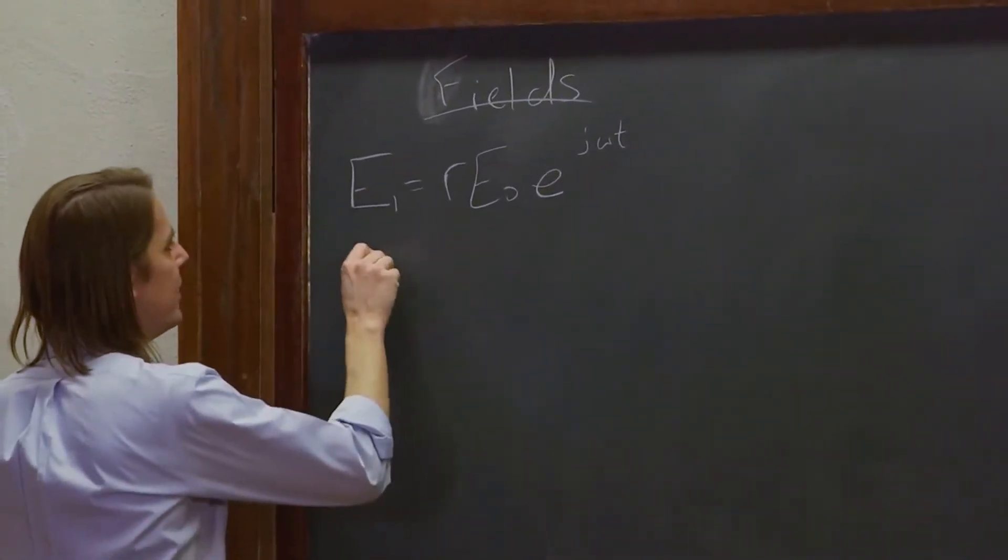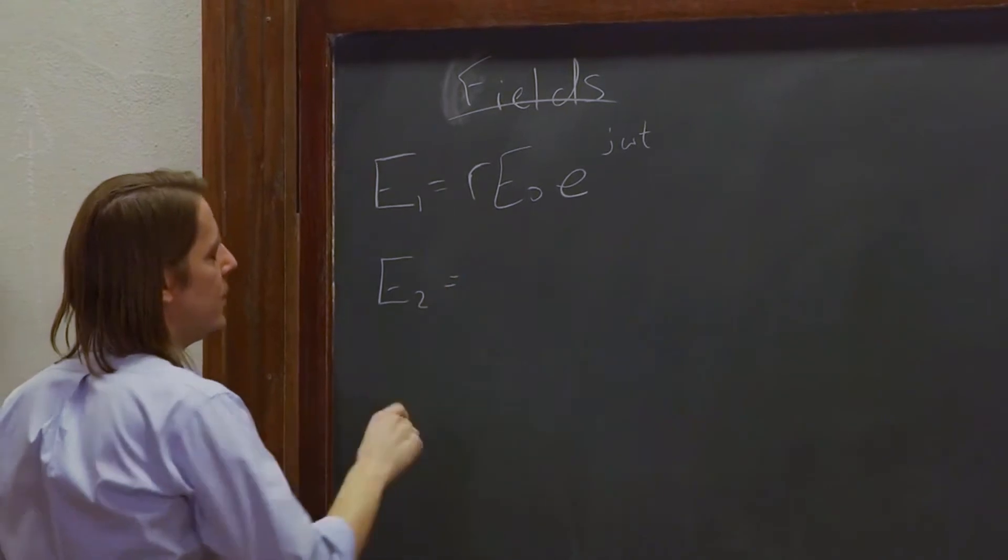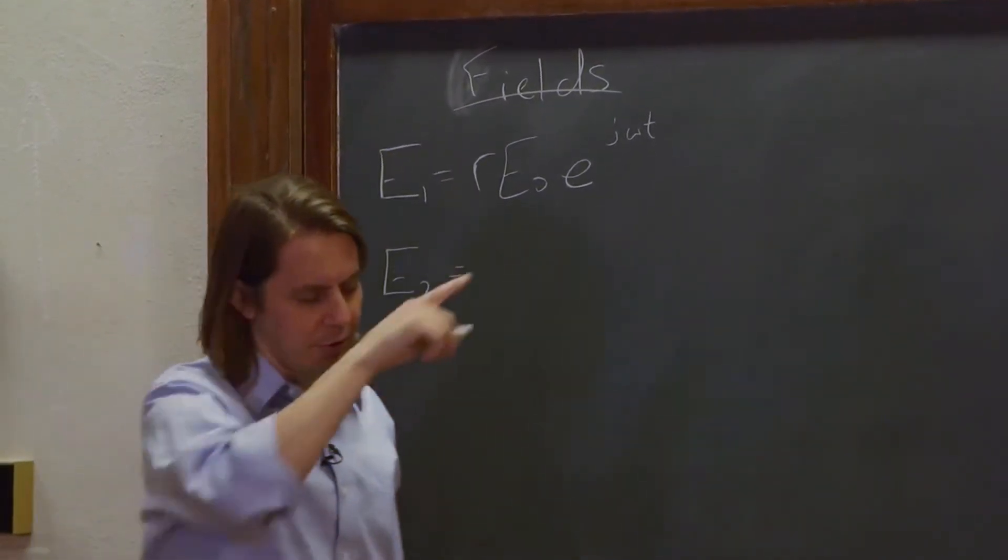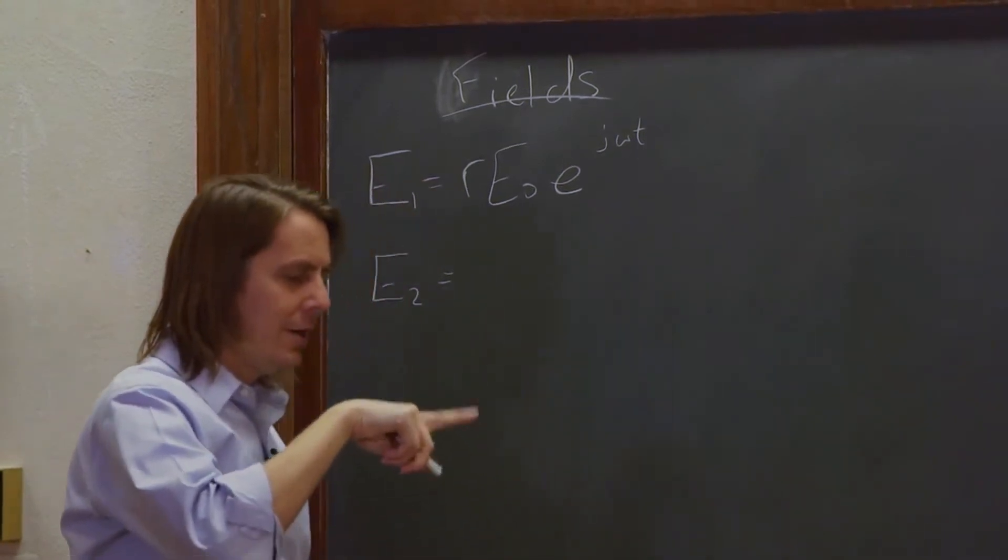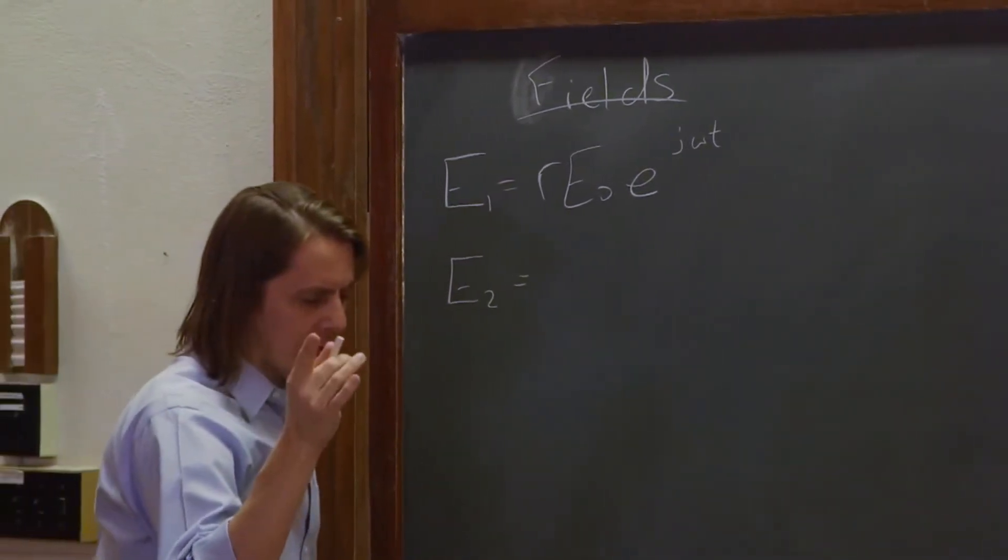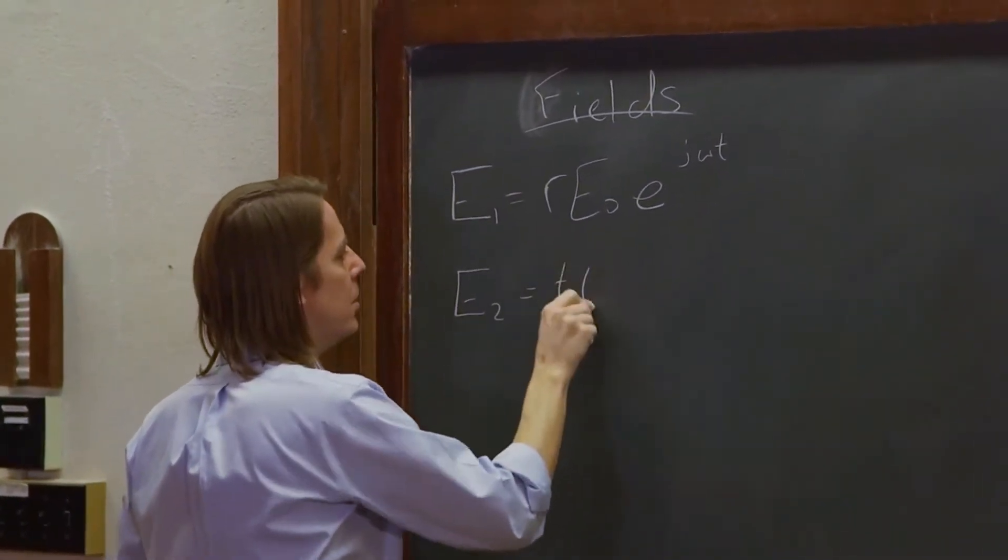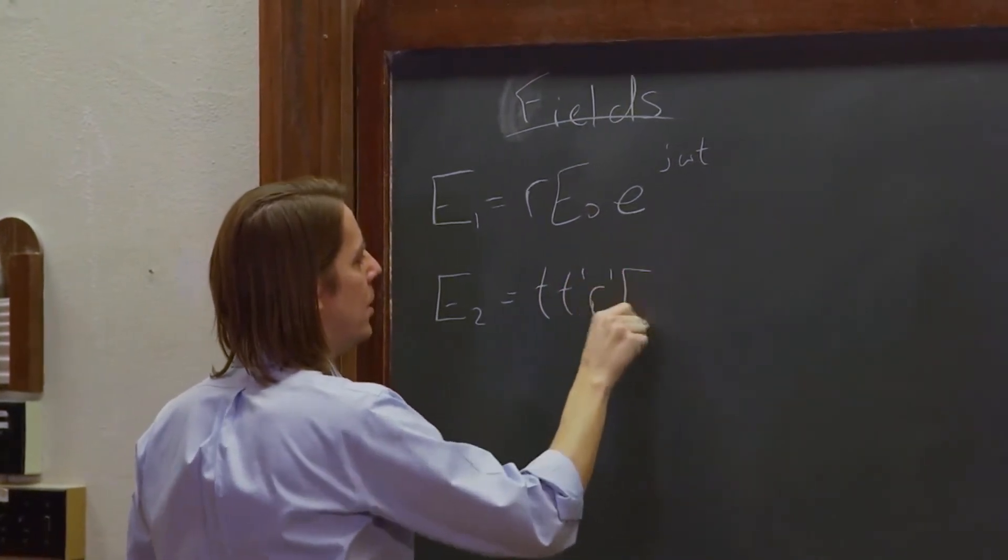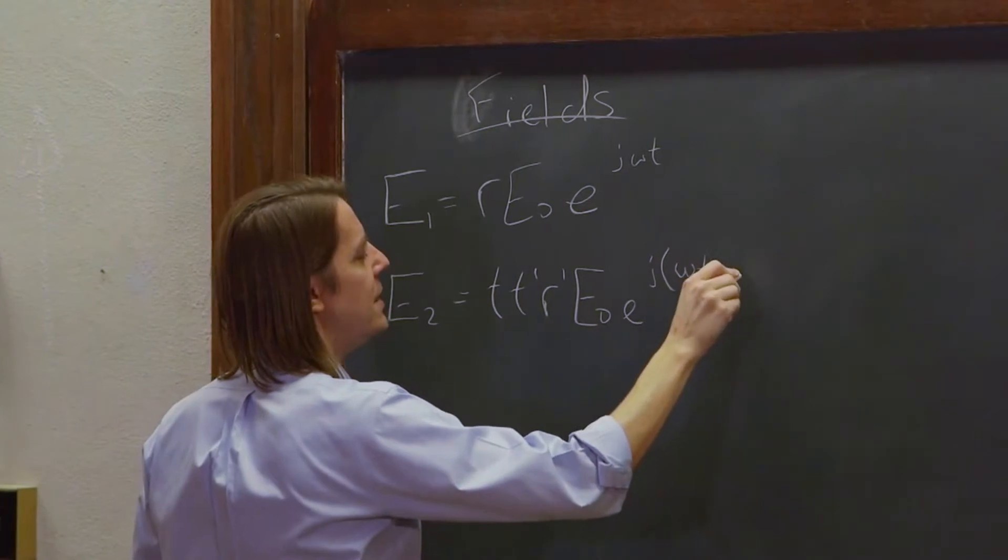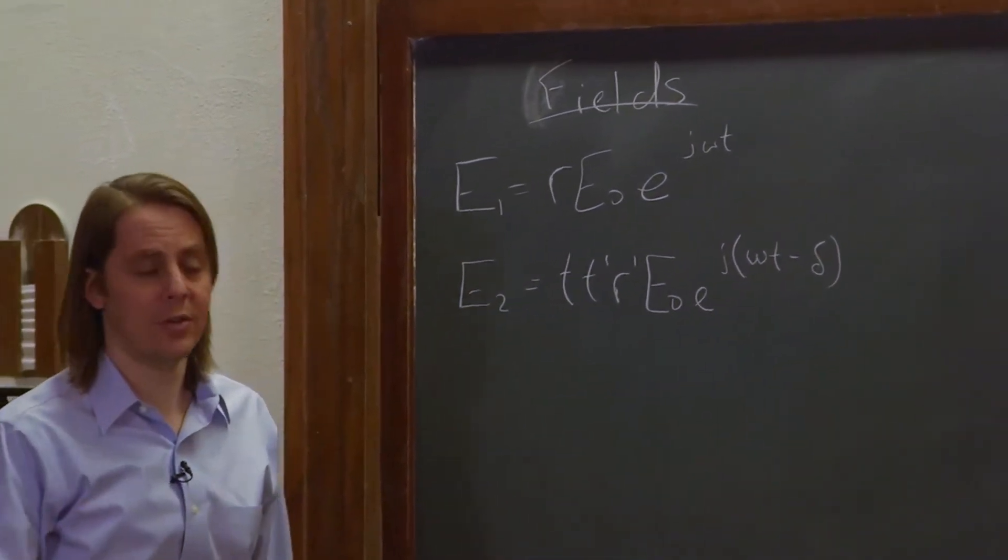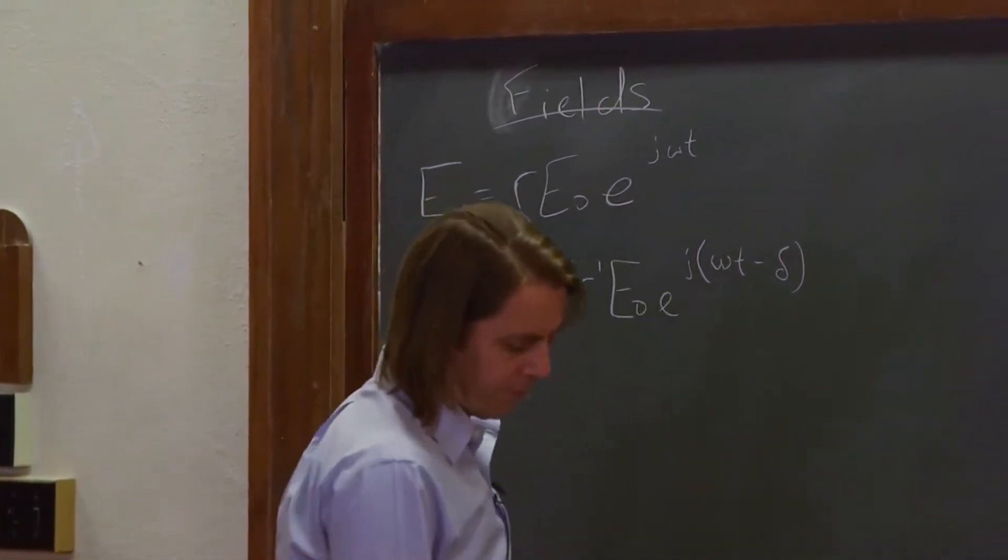Let's look at E2. This is the first one to reflect, or this is the second beam, so it goes in T, it reflects R prime, it goes out T prime, so this one is T, T prime, R prime, E0 E to the J omega T minus one of those deltas. So that delta I described was one trip through the film.